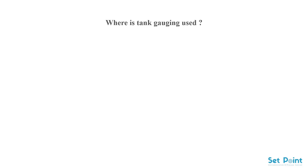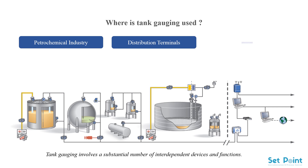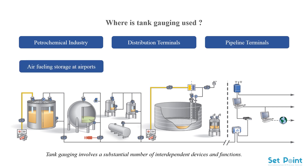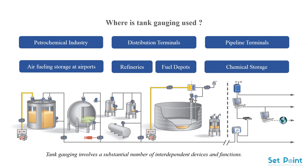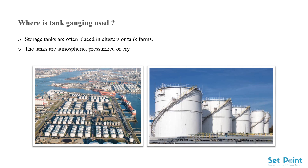Where is tank gauging used? It is used in the petrochemical industry, distribution terminals, pipeline terminals, air fueling storage at airports, refineries, and fuel depots. In addition to chemical storage, storage tanks are often placed in clusters or tank farms. The tanks can be atmospheric, pressurized, or cryogenic.